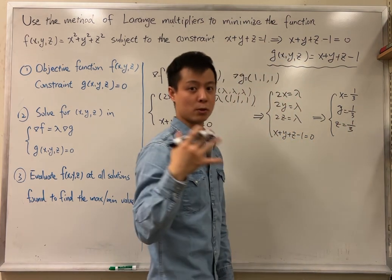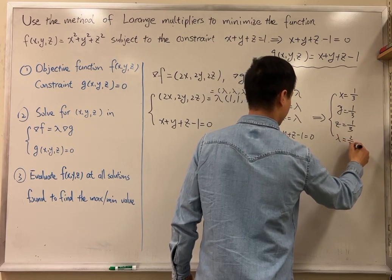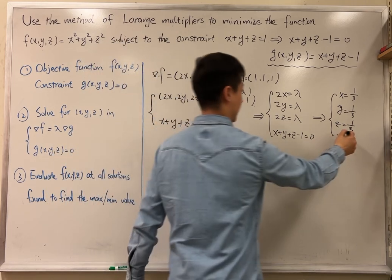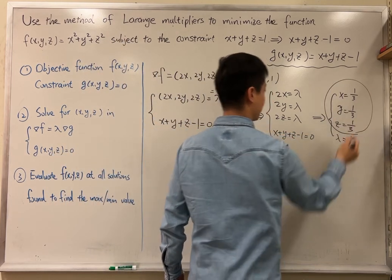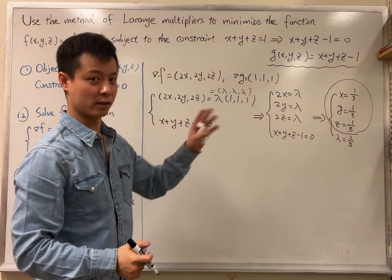Of course, we can also solve for lambda, which is 2/3. But we're not very interested in lambda, because we only look for the point x, y, z. So we have already finished solving this equation.